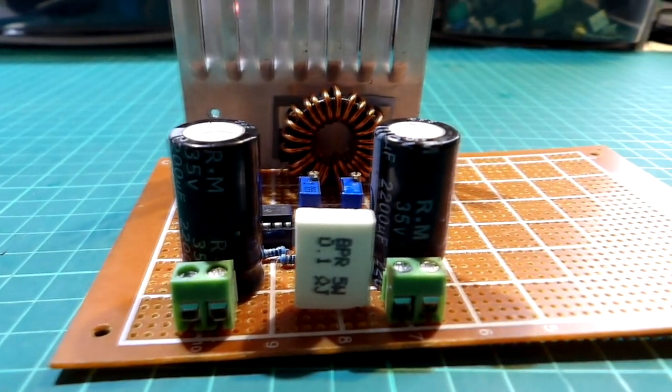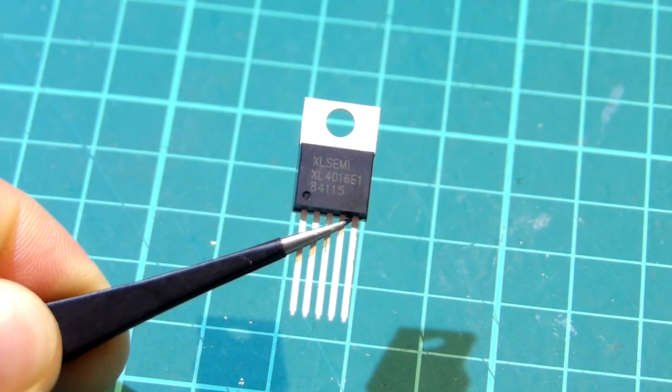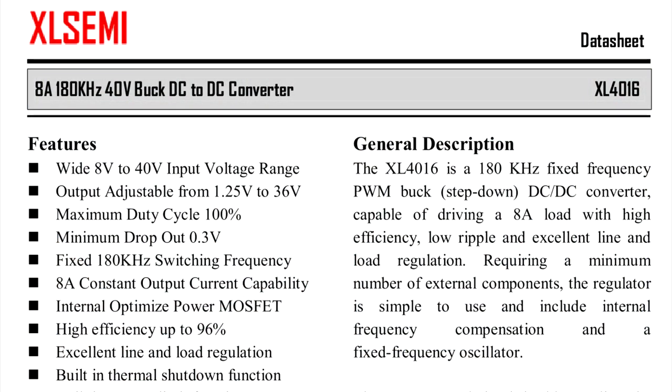So in this video I will show you how to make another buck converter which will be more powerful than the first one. The buck converter will be based on XL4016 which according to the datasheet is a 180 kHz fixed frequency PWM buck or step down DC to DC converter.